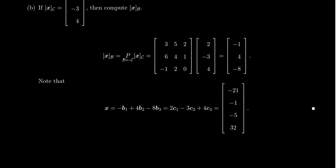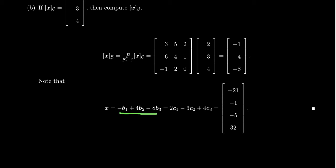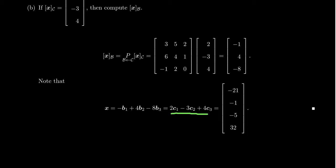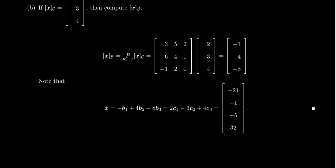So we see that in B coordinates, X looks like (-1, 4, -8). That means X is the linear combination -B1 + 4B2 - 8B3. We also saw the C coordinates of X are (2,-3,4), so X = 2C1 - 3C2 + 4C3. Both of those linear combinations produce the same X, just with different bases. If we insert the original vectors for B1, B2, B3 or the C vectors, we can compute X as a vector in R4, which turns out to be (-21,-1,-5,32).